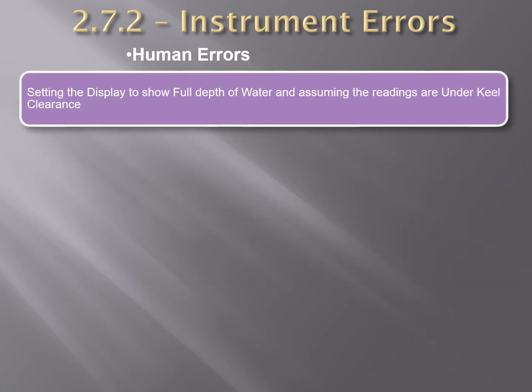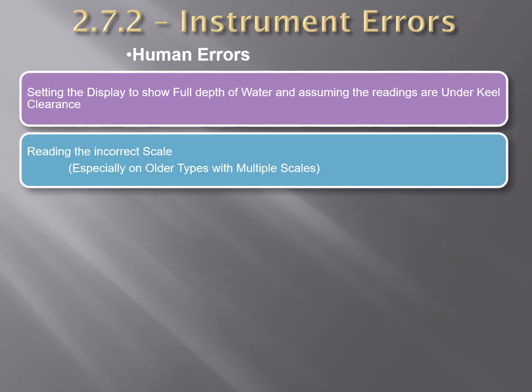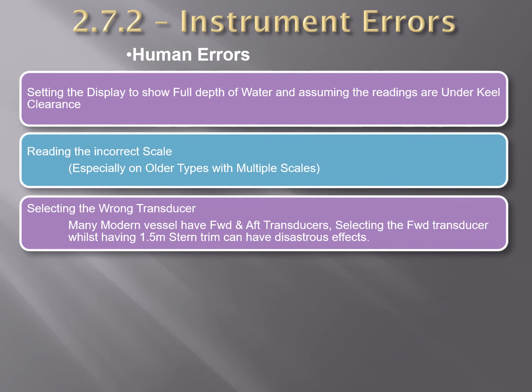Human errors can result from setting the display to show full depth of water while assuming the readings are under keel clearance, as discussed. Errors can also result from reading the incorrect scale, especially on older types with multiple scales. Selecting the wrong transducer is another issue — many ships have both forward and aft transducers, and if you select the forward transducer while the ship has a big stern trim, you may misread the under keel clearance and run the ship aground.